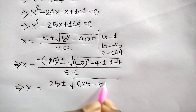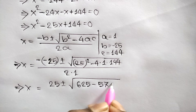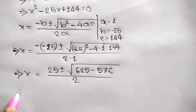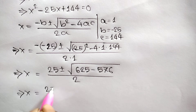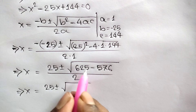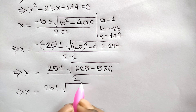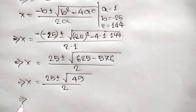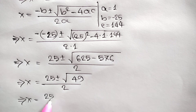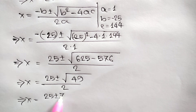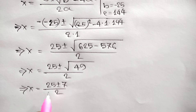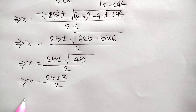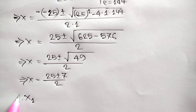Negative times 144 is 576 over 2. So x is equal to 25 plus or minus square root of 625 minus 576, which is 49, over 2. Then x is equal to 25 plus or minus square root of 49, which is 7, over 2.